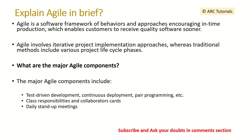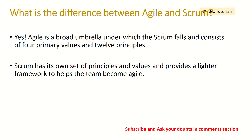What is the difference between agile and scrum? This is a very interesting question with a thin line of difference you should definitely know. Agile is a broad umbrella under which scrum falls — agile is the framework or methodology, and scrum is a part of it. Scrum has its own set of principles and values and provides a lighter framework to help the team become agile.